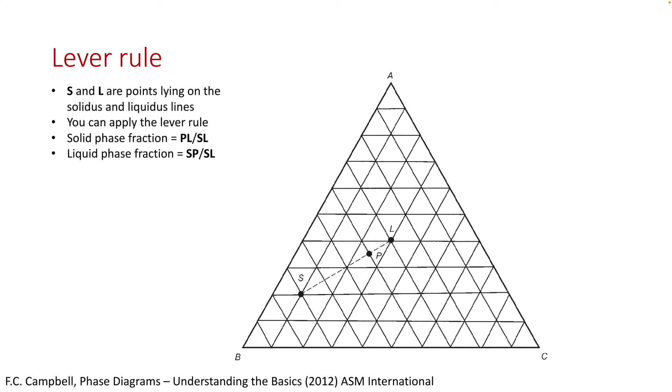Now, let's look at the same phase diagram in a different light. Instead of having S and L two ternary alloys, let's define S as a point on the solidus line, and L a point on the liquidus line. In this case, along the tie line, you can apply the lever rule to estimate the fraction of the solid phase versus the liquid phase.